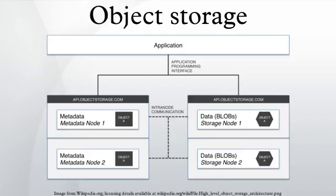Object storage also allows the addressing and identification of individual objects by more than just file name and file path. Object storage adds a unique identifier within a bucket, or across the entire system, to support much larger namespaces and eliminate name collisions.